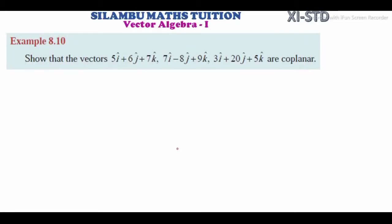Hi students, this is Silambu Maths Tuition, 11th standard, Example 8.10. Show that the vectors 5i + 6j + 7k, 7i - 8j + 9k, and 3i + 20j + 5k are coplanar.